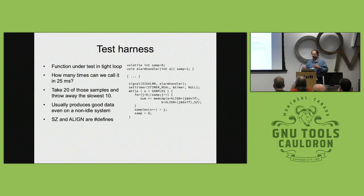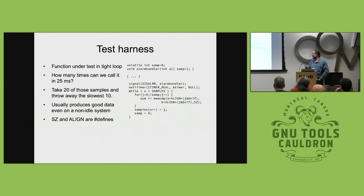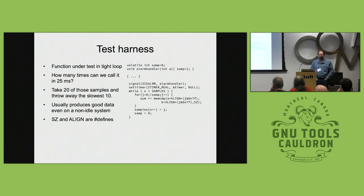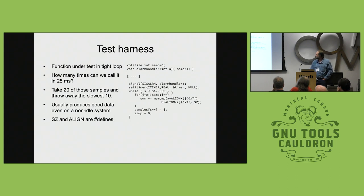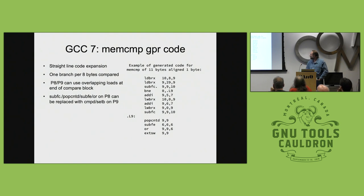One version of the test is the same code compiled two different ways — you can use -mno-builtin-strcmp or whatever to turn off the built-in expansion, giving you a library call, versus leaving it on which gives you a memcompare. Since I don't always test on a dedicated benchmark system, I take a bunch of samples and throw out the slow ones, which are usually when the thread got swapped or someone started a make -j50.